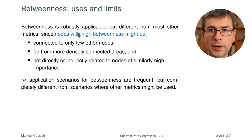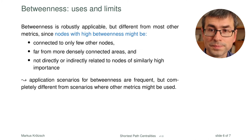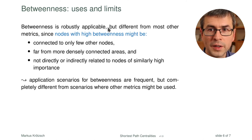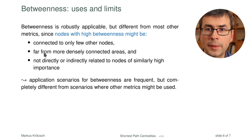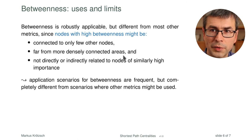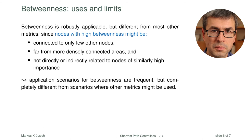Betweenness is very robustly applicable and quite different from most other metrics discussed. In particular, the nodes that get the highest scores might actually be connected to only a few other nodes — they don't have to be hubs. They can be far from densely connected areas, in the middle of nowhere so to speak, as long as many roads pass through them. They may also not be directly related to nodes of similarly high importance.